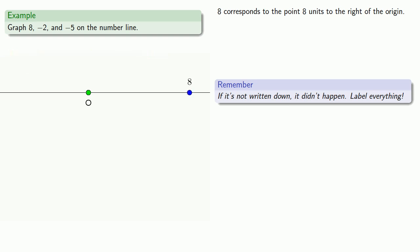Negative 2, because it's negative, it's going to be to the left of the origin. And because it's 2, it's going to be 2 units to the left of the origin. So we'll go from the origin, 2 units to the left. 1, 2. And label.